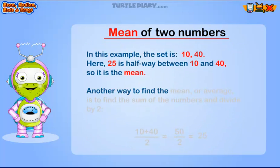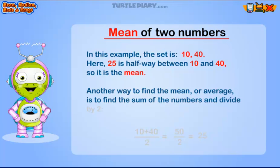Another way to find the mean, or average, is to find the sum of the numbers and divide by two. Ten plus forty over two equals fifty over two equals twenty-five.